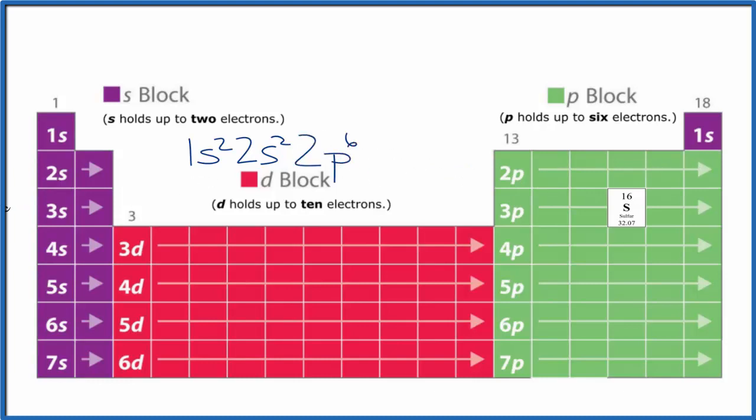We're back to 3s, 3s¹, 3s². And then 3p, 1, 2, 3, 4. So we have 3p⁴. And then we're at sulfur. So we're done. This is the electron configuration for sulfur.